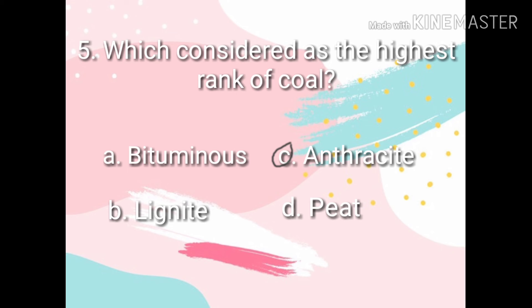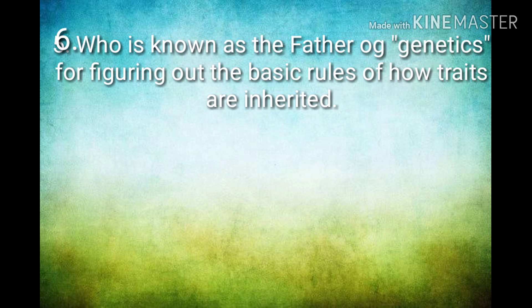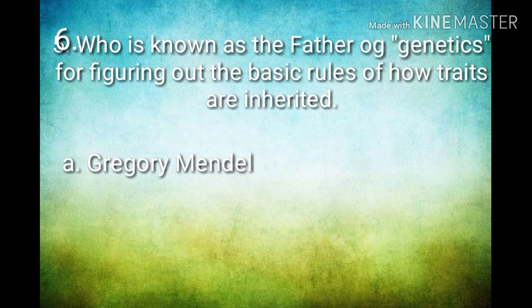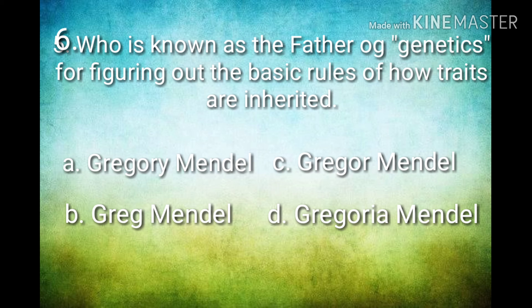For number 6: Who is known as the father of genetics for figuring out the basic rules of how traits are inherited? A Gregory Mendel, B Greg Mendel, C Gregor Mendel, or D Gregoria Mendel? The correct answer is C, Gregor Mendel. Gregor Mendel is the father of genetics.